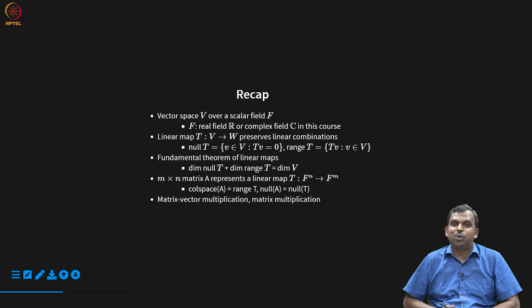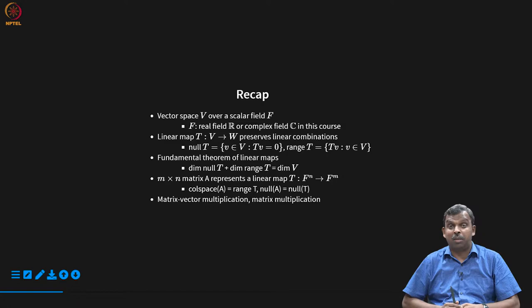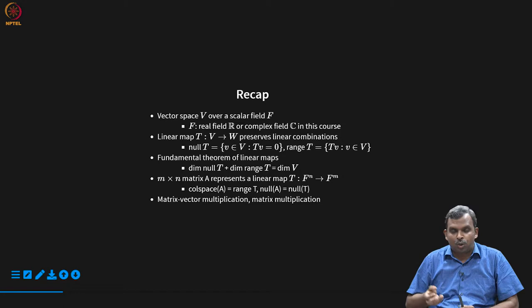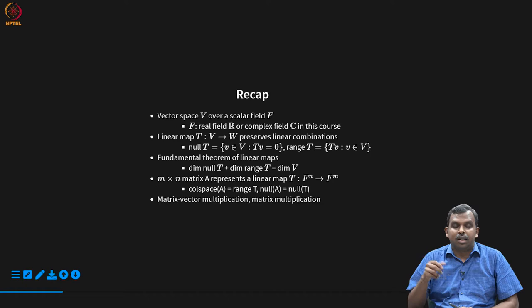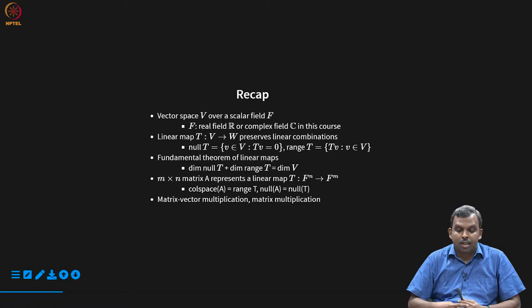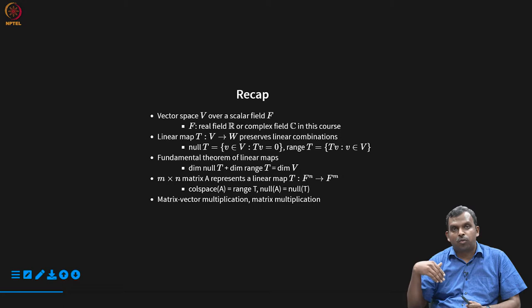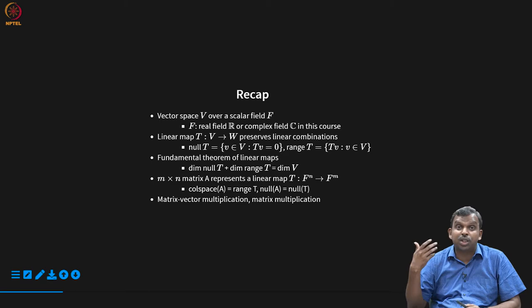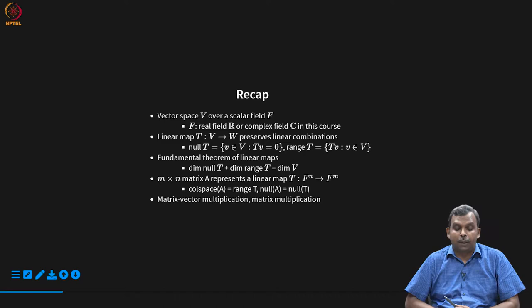Quick recap: the usual notation — the vector space V over a field F, linear map T from V to W, with properties null and range. The fundamental theorem of linear maps plays a very crucial role: the dimension of V equals the dimension of the null space plus the dimension of the range space, when V is finite dimensional. We also saw the connection between an m×n matrix and a linear map from F^n to F^m, and the column space and null space connections between the matrix and the linear map.